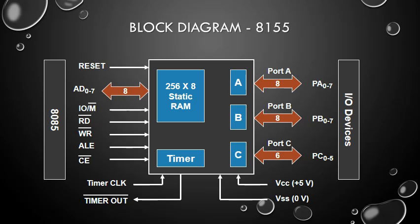The block diagram of 8155: the 8155 is a device with two sections. The first is 256 bytes of static memory and the second is a programmable input/output. Functionally, these two sections can be viewed as two independent chips. The input/output section includes two 8-bit parallel I/O ports A and B, one 6-bit port C, and a timer. All ports can be configured as input or output ports.